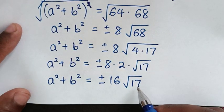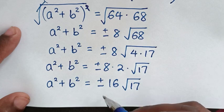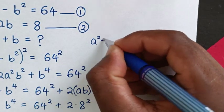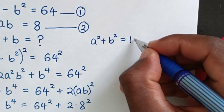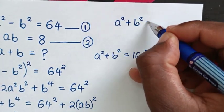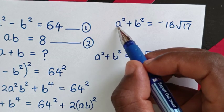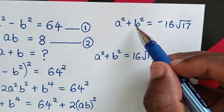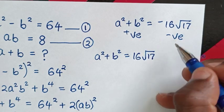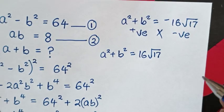We have two solutions due to plus or minus: positive 16 root 17 and negative 16 root 17. Since the square of any number is a positive value, a squared plus b squared must be positive. Therefore the negative solution is not possible and we reject it, as it gives no real solution. We continue with the positive solution: a squared plus b squared equals 16 root 17.